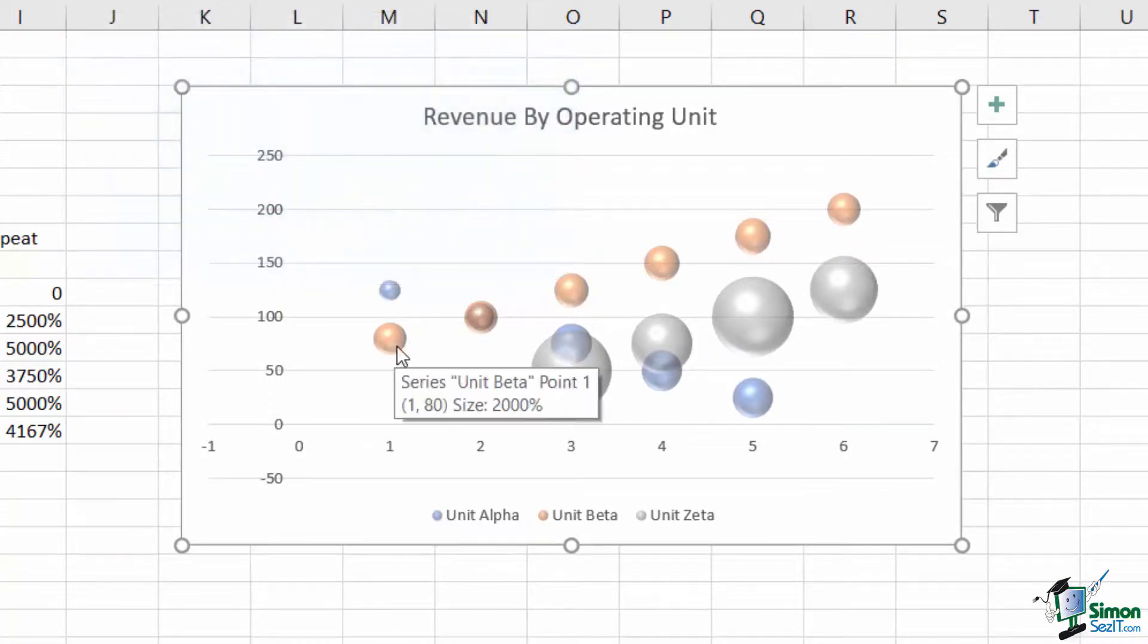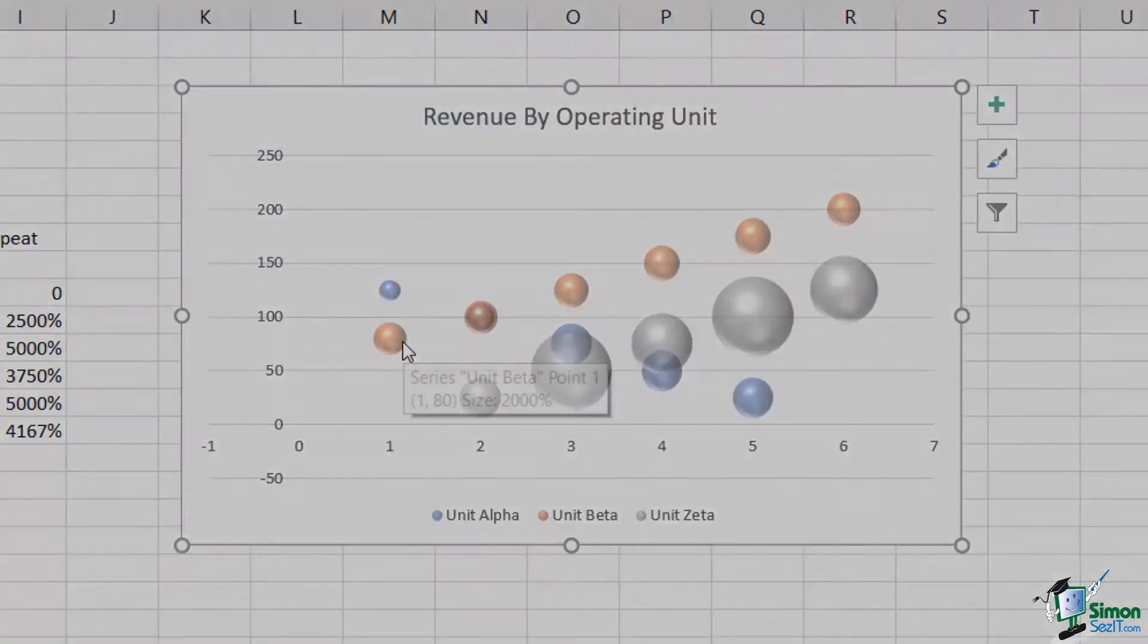This completes our coverage of the bar, column, line, and scatter plot charts. In our next lesson, we'll dive into the surface charts and radar charts.